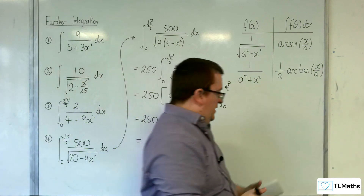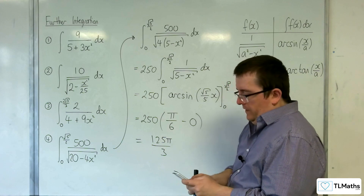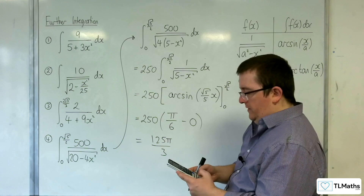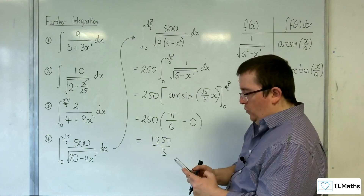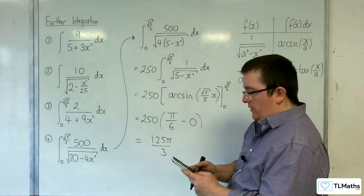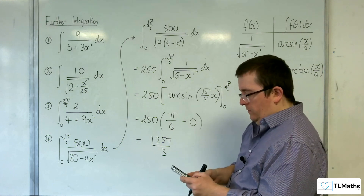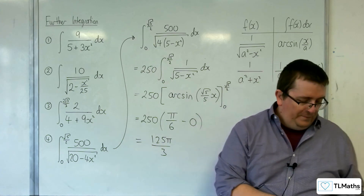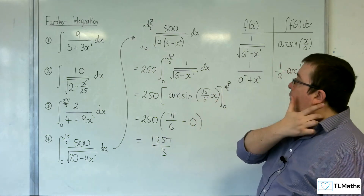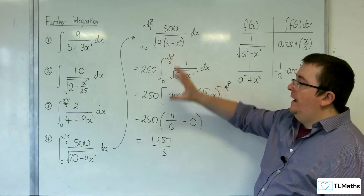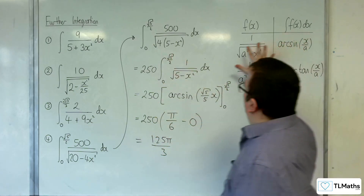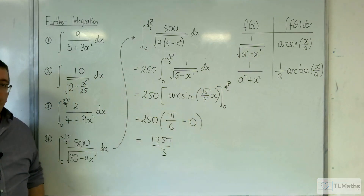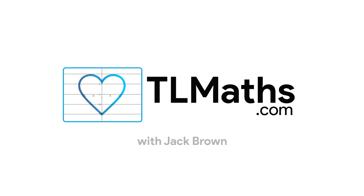Let's double check on our calculator: the integral of 500 over the square root of 20 take away 4x squared, evaluated between 0 and root 5 over 2, and we get 125 thirds pi. So that's all good. That's how we can deal with both indefinite and definite integrals. Don't forget, you've got these formulas given to you in the exam, so make sure you use them.